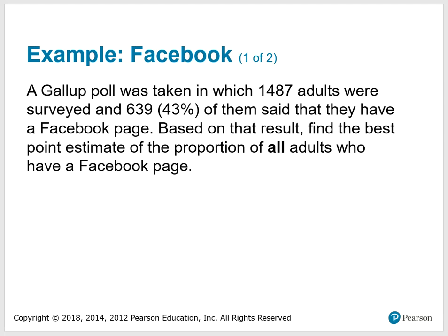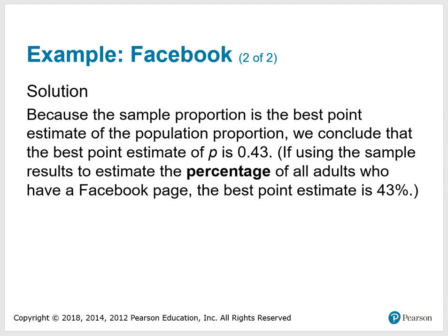Here's an example. A Gallup poll surveyed 1,487 adults and 639, or 43%, said they have a Facebook page. Based on that result, find the best point estimate of the proportion of all adults who have a Facebook page. Because the sample proportion is the best point estimate of the population proportion, we conclude that the best point estimate of P is 0.43, or 43%.